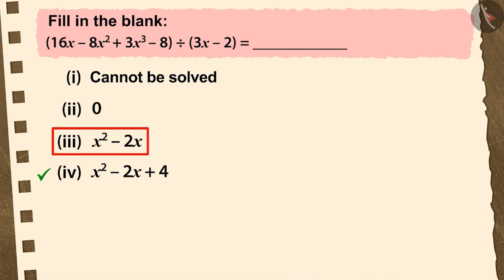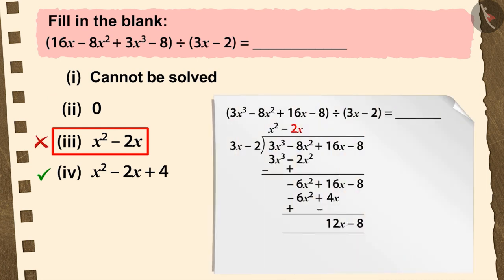If you have chosen the third option, it is a good try. But this is also an incorrect answer. Processing the division process with the second term of the quotient, the remainder is 12x minus 8, and its degree is equal to the degree of the divisor.